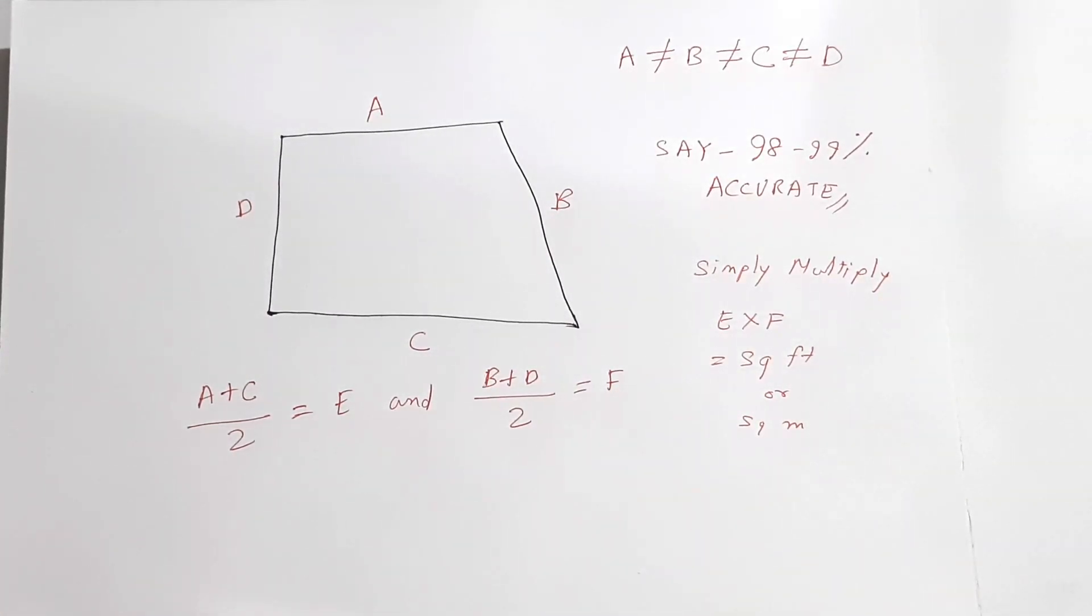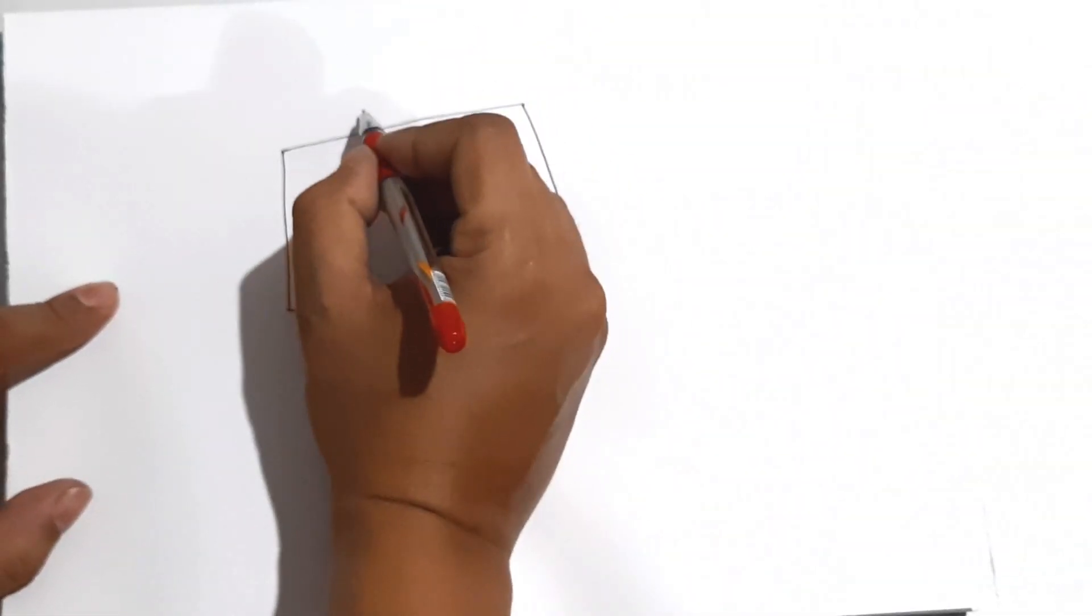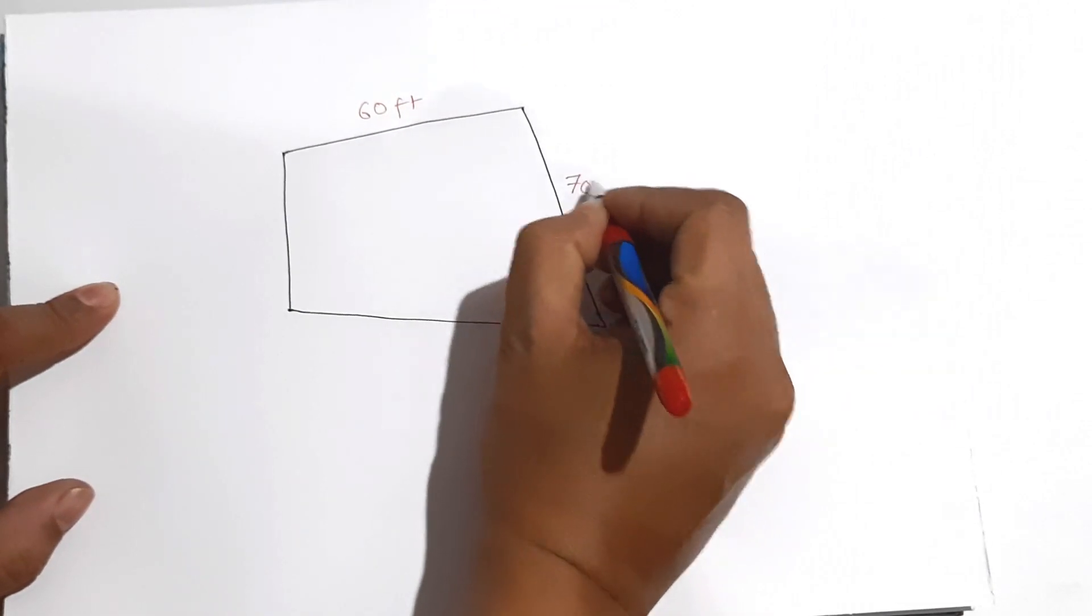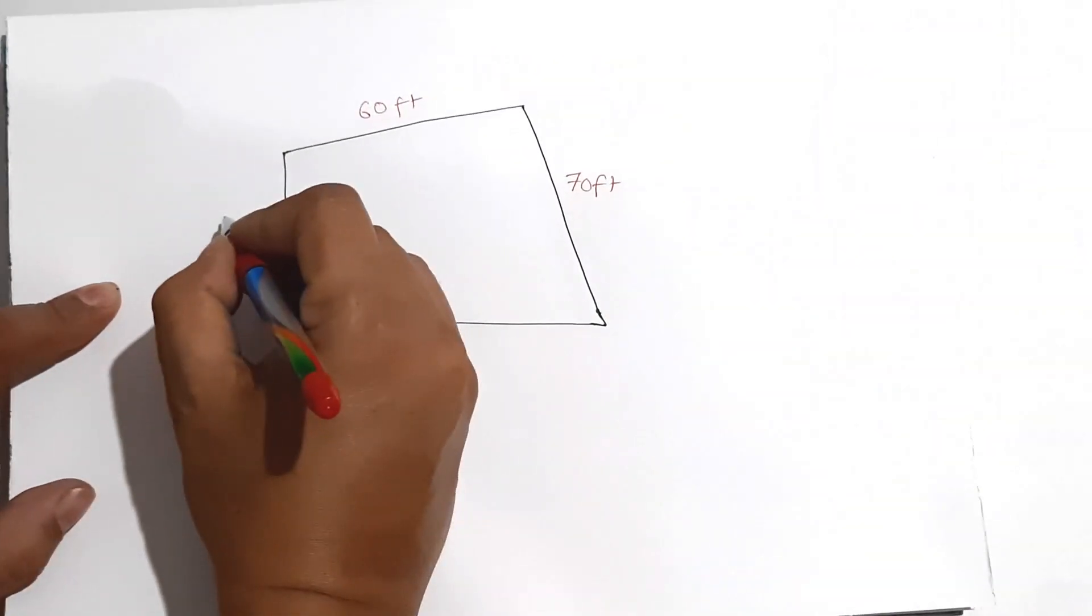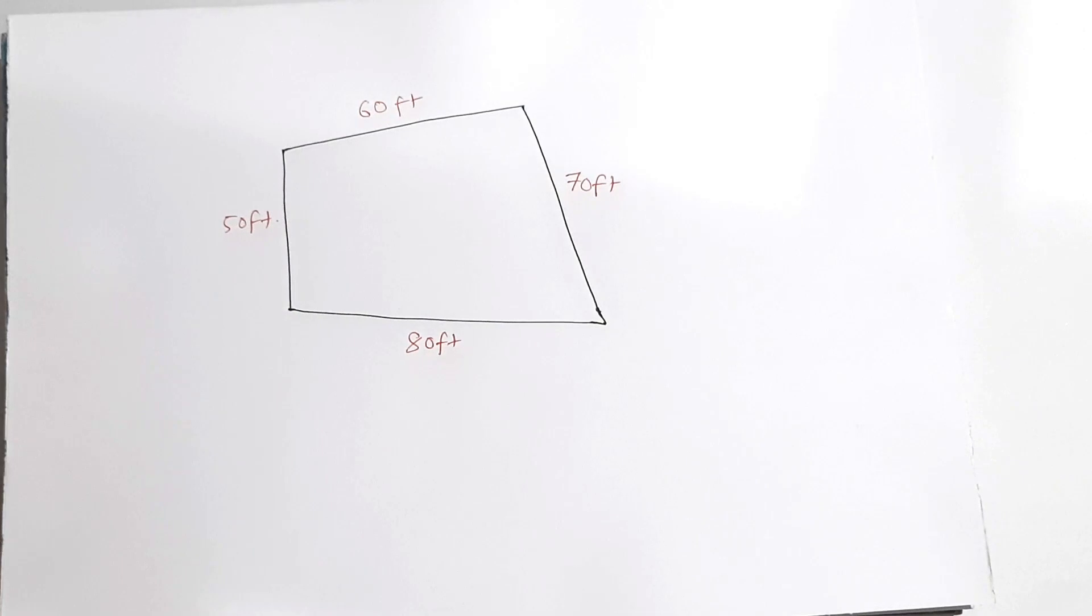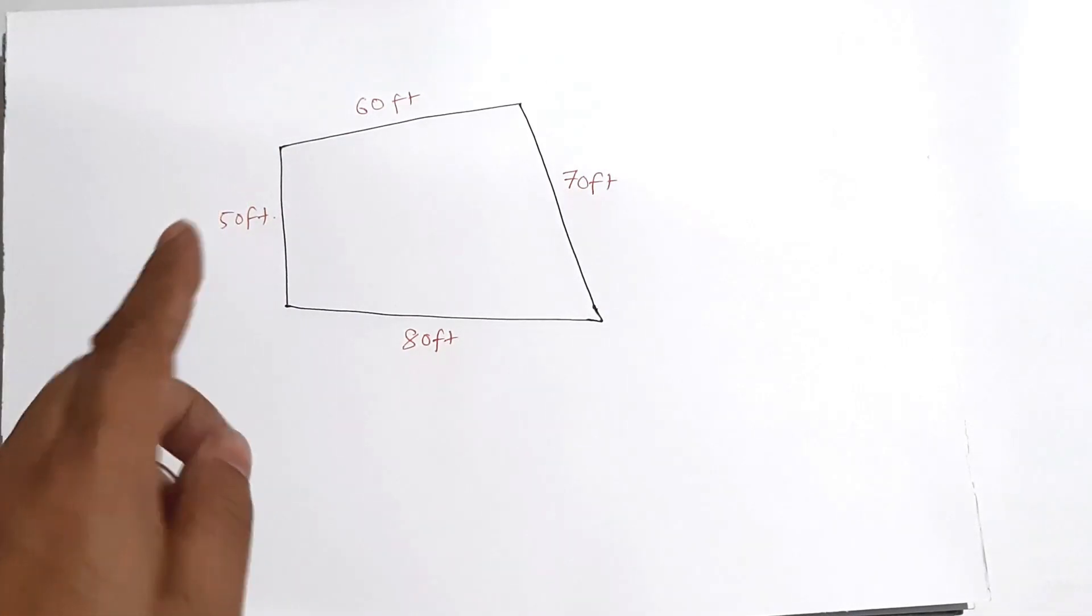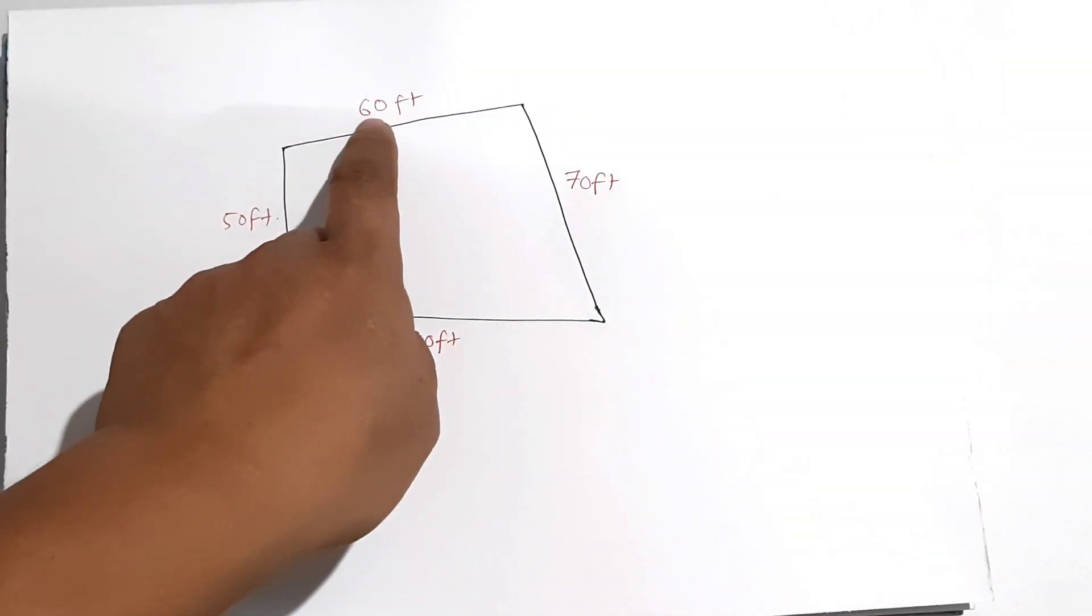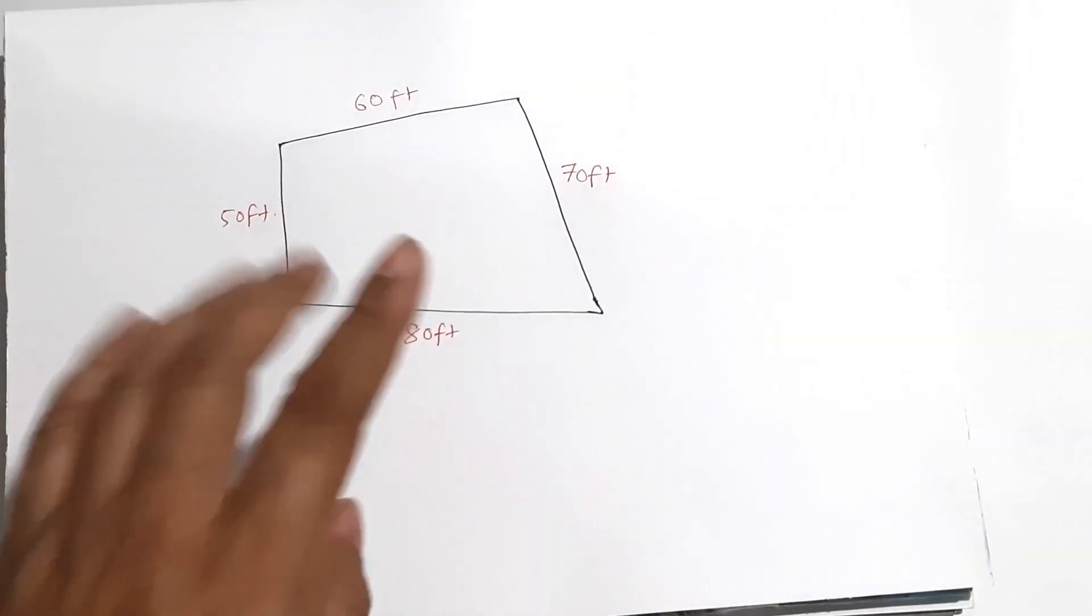I will tell you with an example now. Suppose this is the area. Suppose this length is say 60 feet. This is 70 feet. This is 80 feet. And this is say 50 feet. Since the unit is feet, the area will be square feet. You can convert square feet to square meter on the internet. But here we have taken the unit as feet, so the area will be square feet.